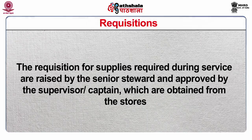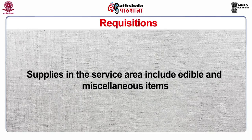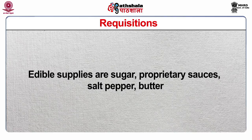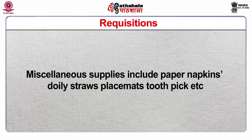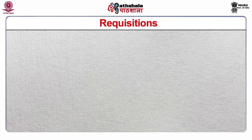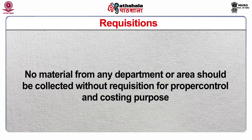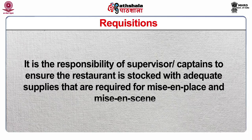Requisitions: Requisitions for supplies required during service are raised by the senior steward and approved by the supervisor, which are then obtained from the stores. Supplies in the service area include edible and miscellaneous items. Edible supplies are sugar, proprietary sauces, salt, pepper, and butter; miscellaneous supplies include paper napkins, doily papers, straws, placement mats, toothpicks, etc. No material from any department or area should be collected without a requisition, for proper control and costing purposes. It is the responsibility of the supervisor to ensure the restaurant is stocked with adequate supplies required for Mise en Place and Mise en Scene.